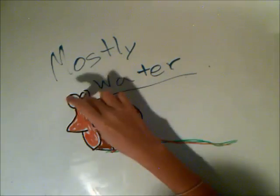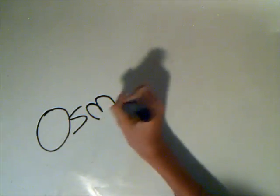Snails are made up of mostly water. That's why they're so slimy, and they drink through their skin using osmosis.